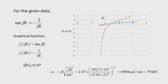Using the graphical method, we define f₁ = tan(βL) and f₂ = −2/(βL), and find their intersection. Since tan(βL) has unbounded values at π/2, 3π/2, 5π/2, etc., and there is no root in the range 0 to π/2, we search between π/2 and 3π/2. The graph, drawn in Excel, shows the intersection at βL = 2.47.